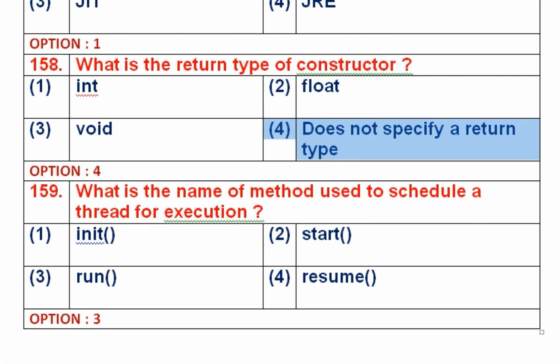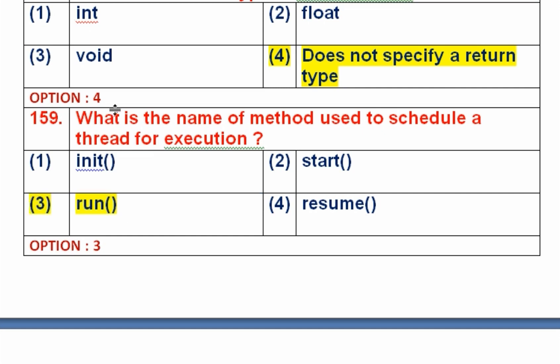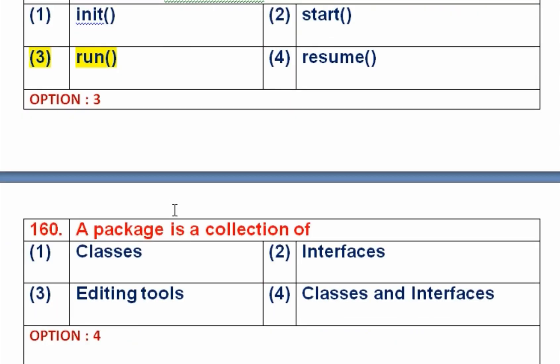Question number 159: What is the name of the method used to schedule a thread for execution? Option 1 is init, option 2 is start, option 3 is run, option 4 is sleep. The run method contains the core functionality of every thread that is going to be executed when the thread runs. So option 3, run, is the right answer.